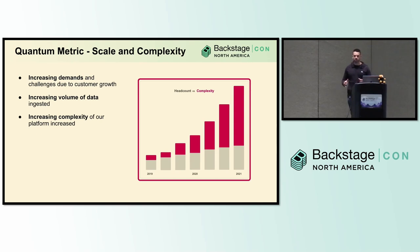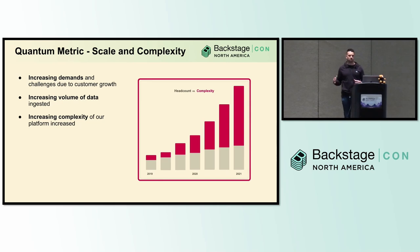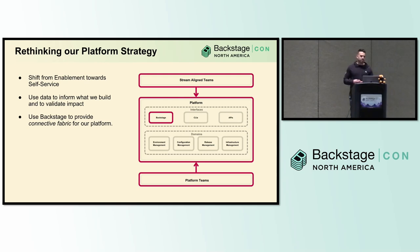In 2020, we saw a big uptake in customer growth. Not only did we see the number of customers growing, but also the volume of data we were ingesting, which led to the overall complexity of our platform increasing. We knew we needed to rethink our approach if we didn't want this to slow us down and wanted to continue delivering value quickly. Part of that meant shifting from primarily providing enablement to thinking more about self-service capabilities, and using data better to understand what we're building and validate the impact.